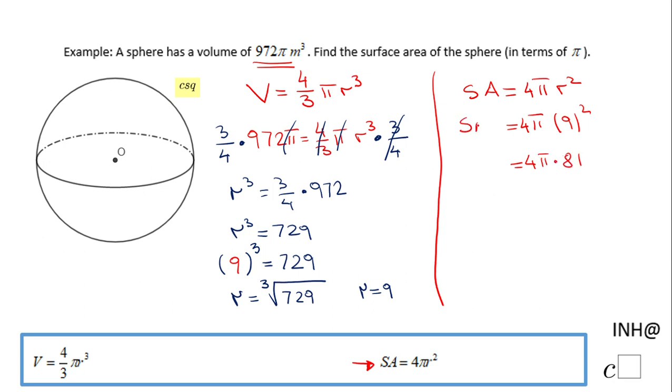And now we have one more step, 4 times 81. That will be 324π.